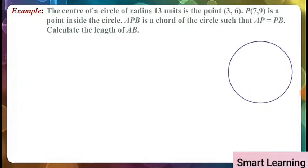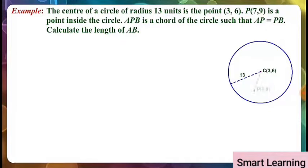Let's take the next example. The center of a circle of radius 13 units is the point (3,6). P(7,9) is a point inside the circle. APB is a chord of the circle such that AP is equal to PB. Calculate the length of AB.